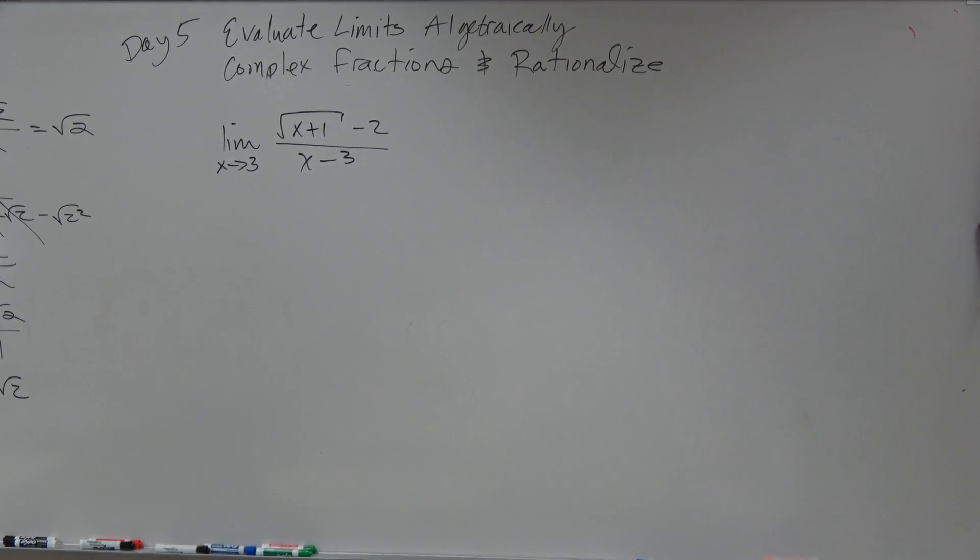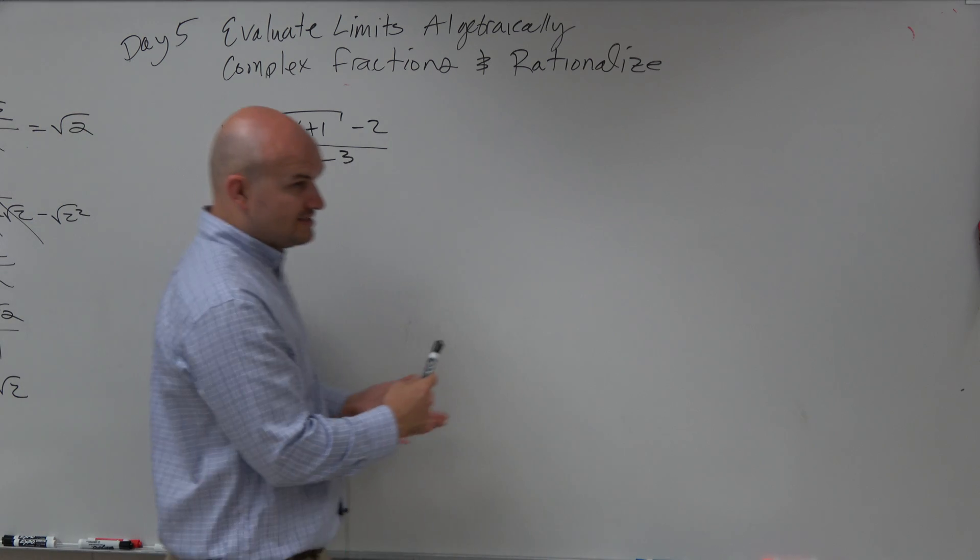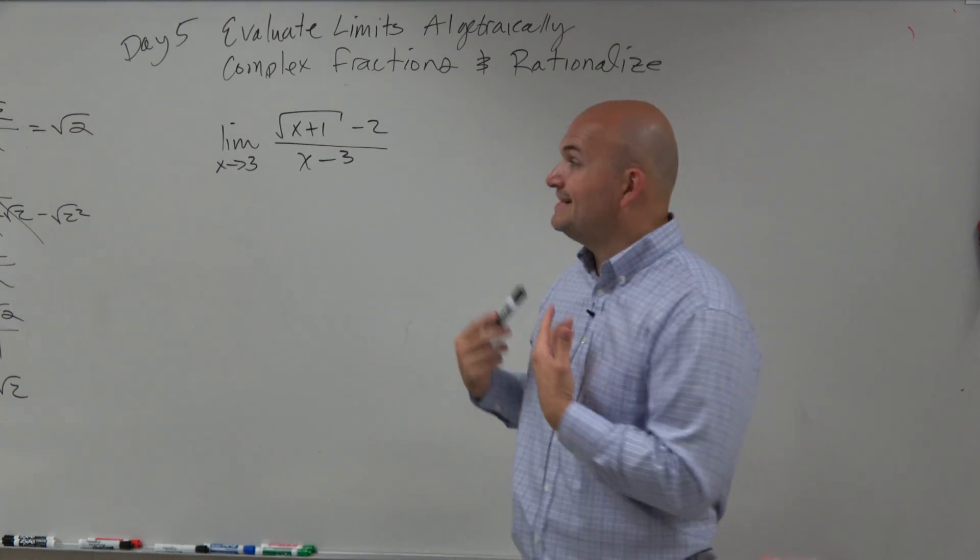When you see limits with radicals, rationalizing the radical doesn't matter if the radical is in the numerator or in the denominator. We're going to want to multiply by the conjugate.